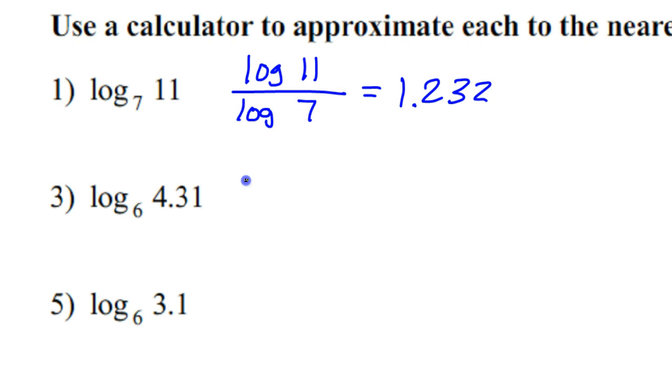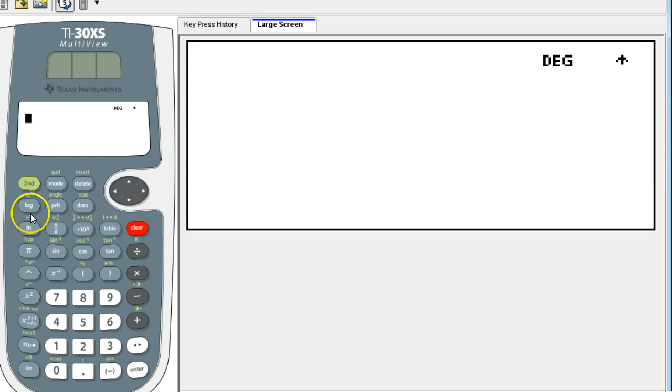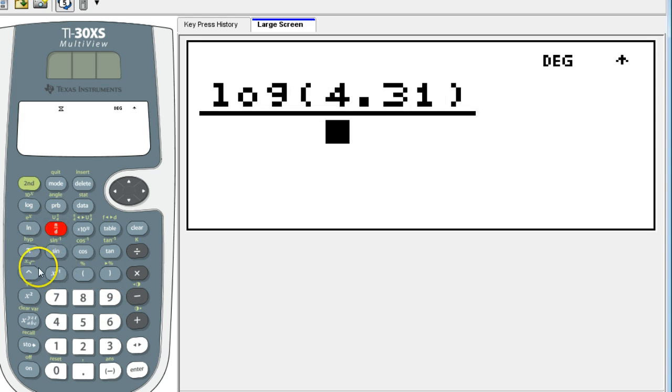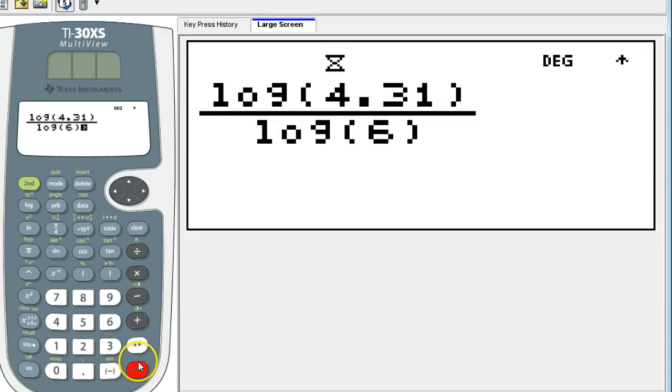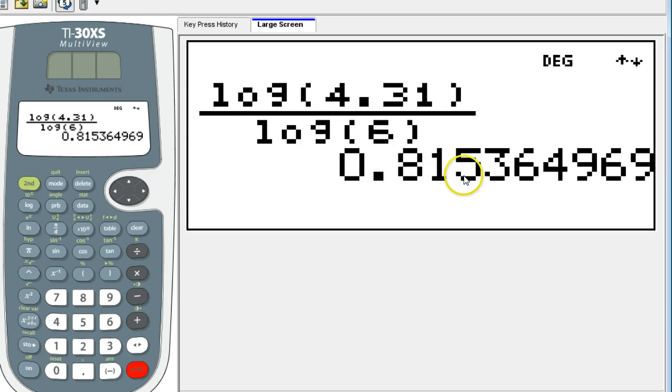Number three. This will be the log of 4.31 over the log of 6. 0.815.